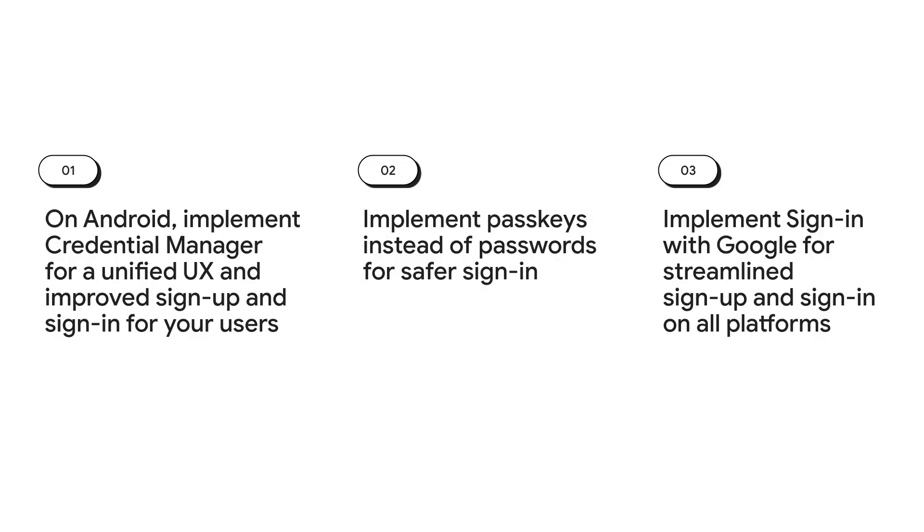And that's it! Our aim is to simplify the way developers interact with Android and Google identity solutions and help users seamlessly and securely access their accounts across Android apps and websites. Our goal is to provide features and tools that support the Android developer community in building more secure apps. On Android: implement Credential Manager for a unified user experience and improved sign-up and sign-in; implement Passkeys instead of passwords for safer sign-in; implement sign-in with Google for streamlined sign-up and sign-in on all platforms. Check the video description to find more resources on how to improve sign-in and sign-up flows in your apps. Thank you!